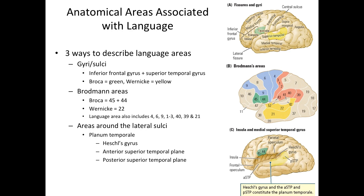The anatomical landmarks researchers use to describe brain regions associated with language vary considerably and undergo constant revision. Some researchers refer to specific gyri, some refer to Brodmann areas — each number corresponds to a specific Brodmann area — and others refer to different areas around the lateral sulcus, such as Heschl's gyrus or the anterior and posterior superior temporal plane. These are three very different ways of describing language-associated brain regions.